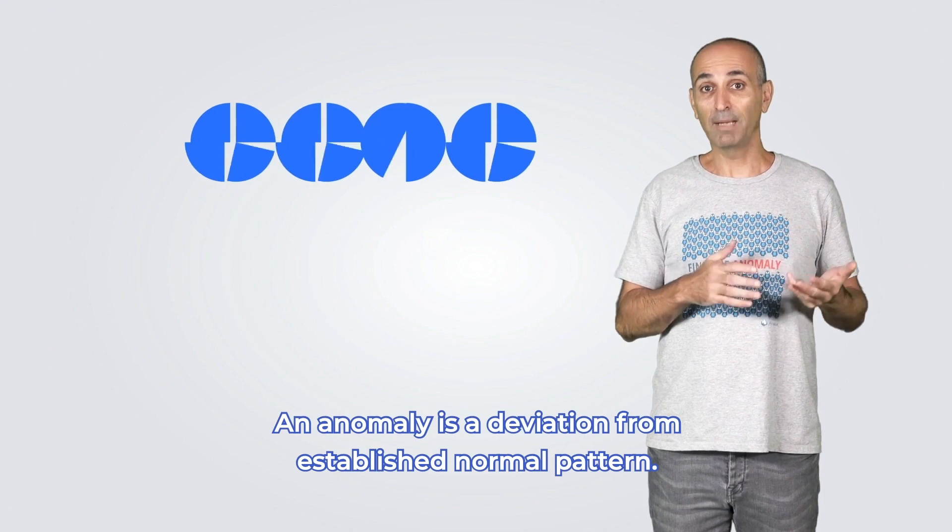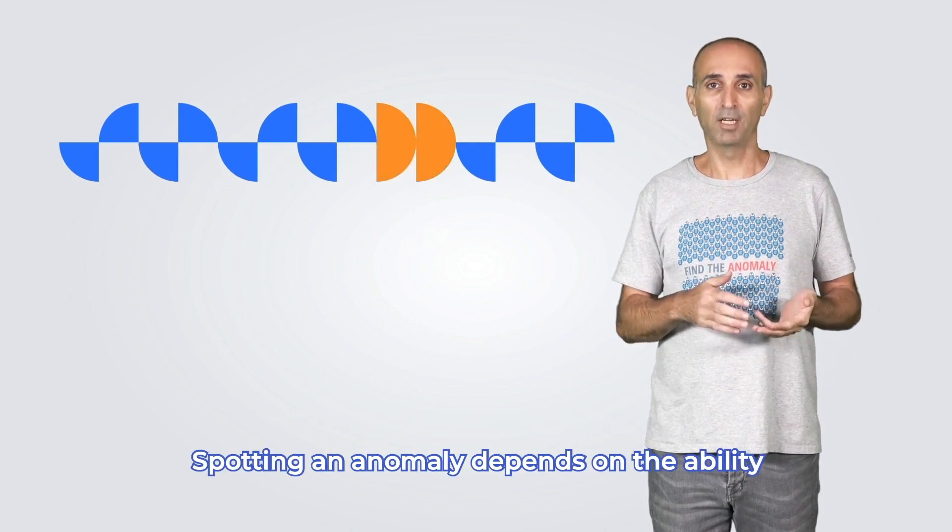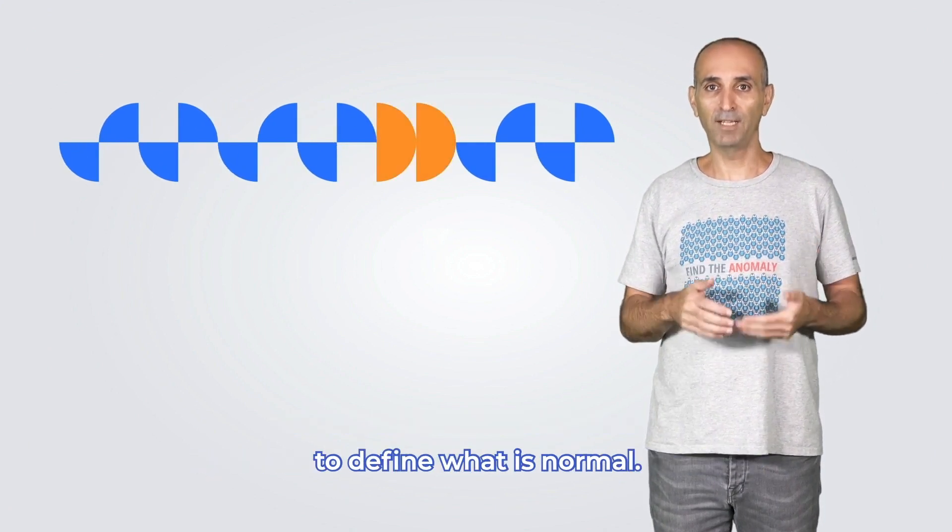An anomaly is a deviation from an established normal pattern. Spotting an anomaly depends on the ability to define what is normal.